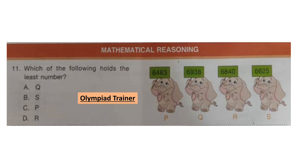The next section is Mathematical Reasoning. Question 11: Which of the following holds the least number? Numbers P, Q, R, and S elephants are holding are given. The correct answer is elephant P. P is holding 6483, which is the least among the given numbers, and P is in option C. So option C is the answer.